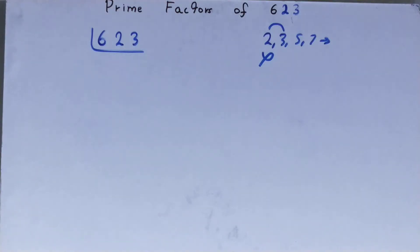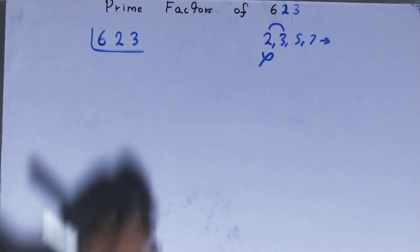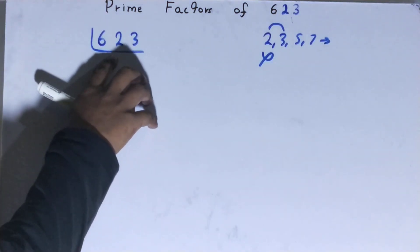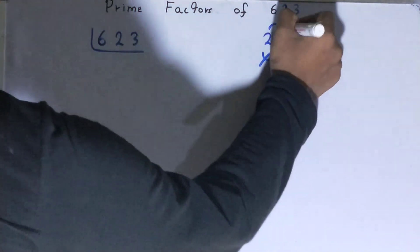Is the number 623 divisible by 3? Let's check. 3 times 20 is 60... 623... no, it is not divisible by 3. We'll check it with the next lowest prime number, that is 5.